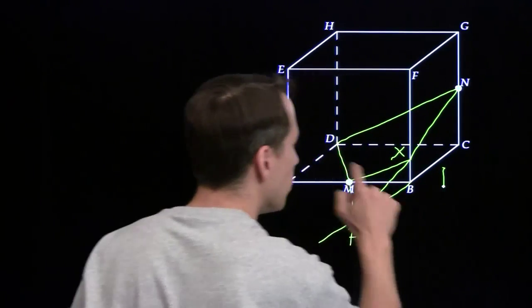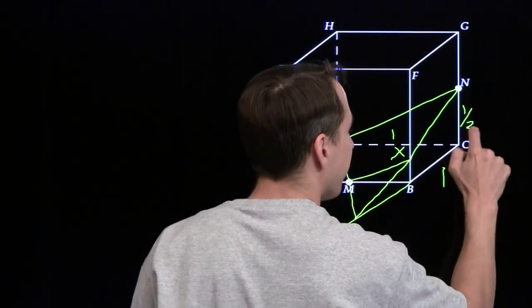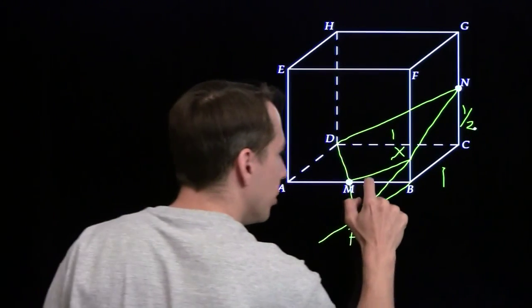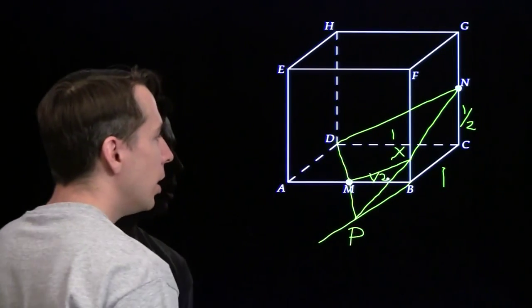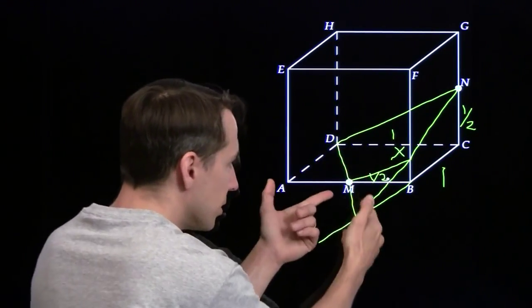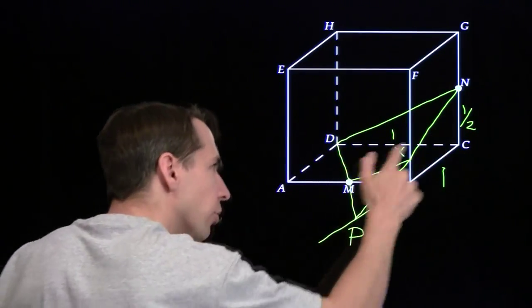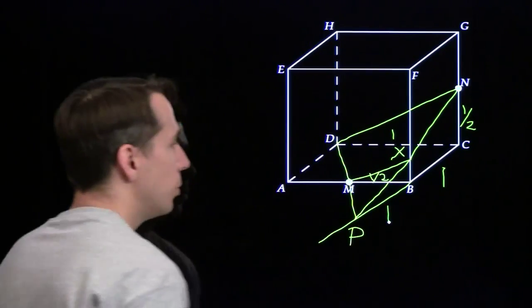This is a unit cube. So BC is 1. CD is 1. CN is 1 half. M is the midpoint of AB. So that's 1 half as well. Now PBM is similar to PCD. You can see that MB is half of DC. So we know that B is also the midpoint of PC. So PB is 1.